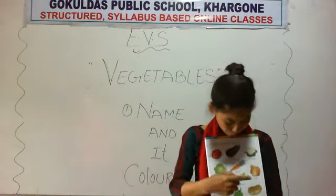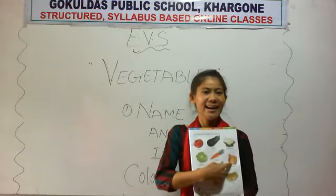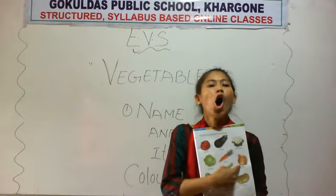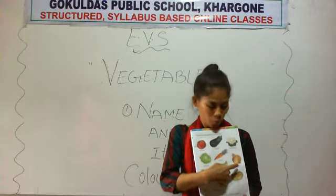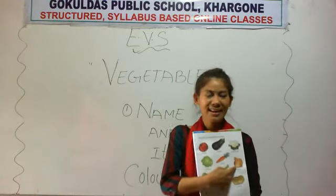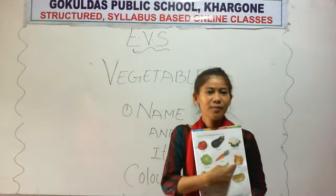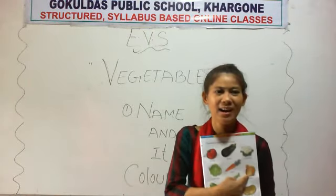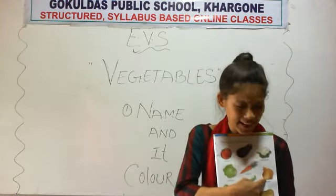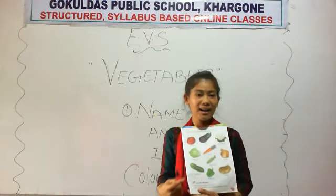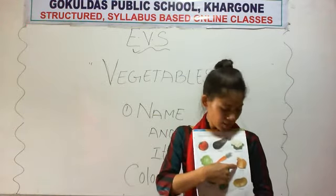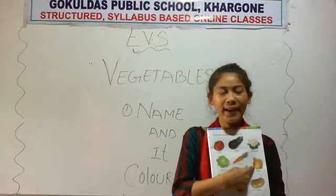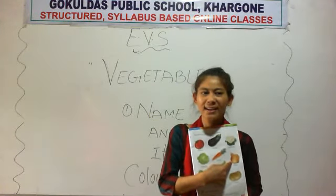Now see here. What is this? This is onion. Onion is a vegetable. And what is the color of onion? It looks like orange color, but the onion color is purple. What is the color of onion? Purple.